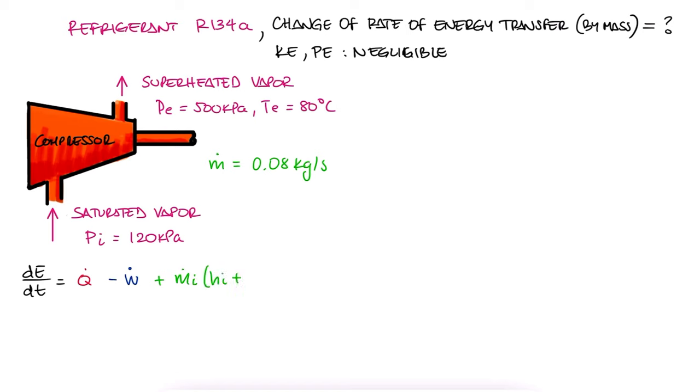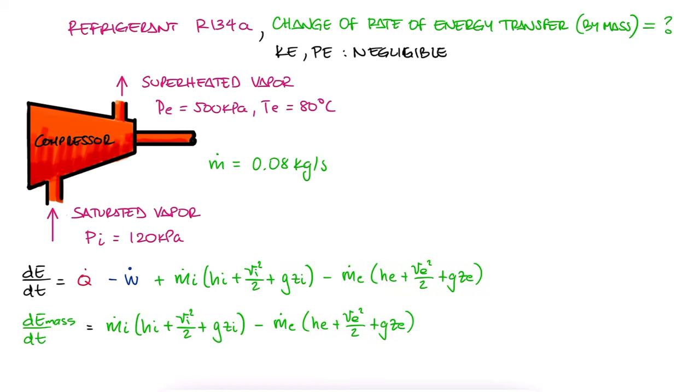Starting with the general expression we derived during the main lecture video and focusing on what we're being asked, the rates of energy transfers by mass, we cross out the kinetic energy and potential energy terms, as told by the problem statement, and see that the change of interest to us reduces to Mi dot times Hi minus Me dot times He.